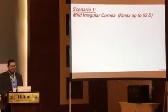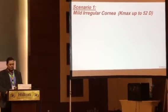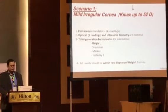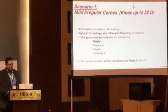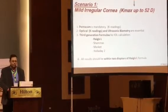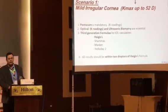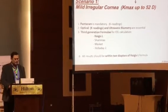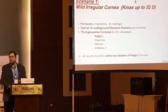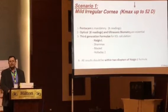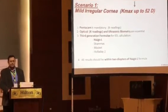Scenario one: mild irregular cornea with Kmax up to 52 diopters. Pentacam is mandatory. Optical keratometry readings and ultrasonic biometry are essential. Use third-generation formulas: Haigis-L, Shammas, Masket, and Hoffer Q2. All these formulas should yield results within 2 diopters of the Haigis-L formula for this high-K cornea.